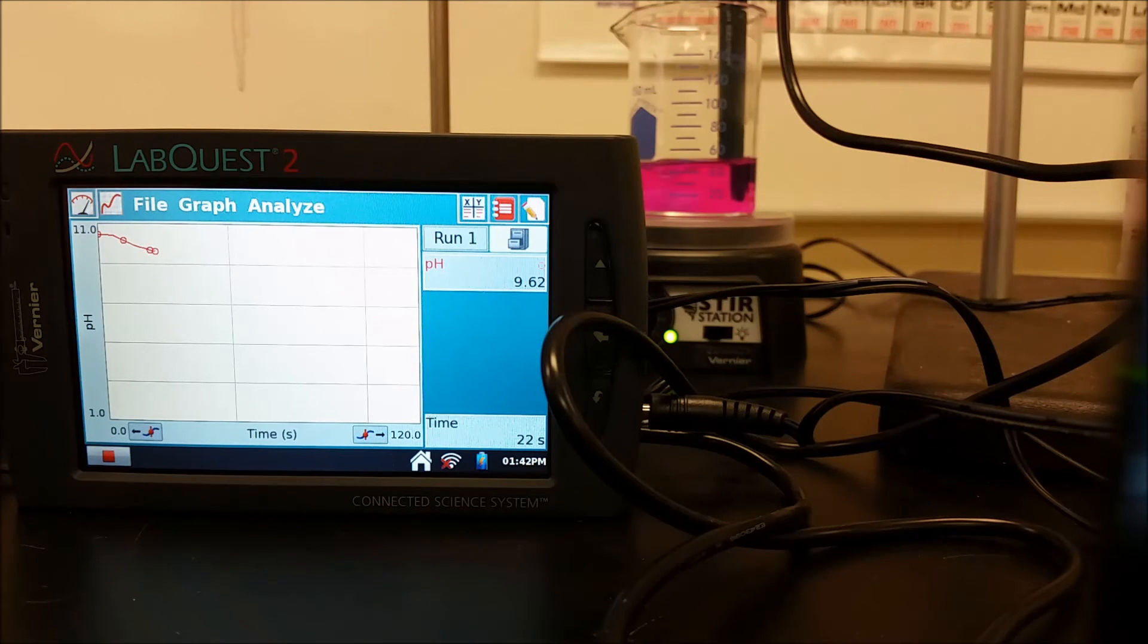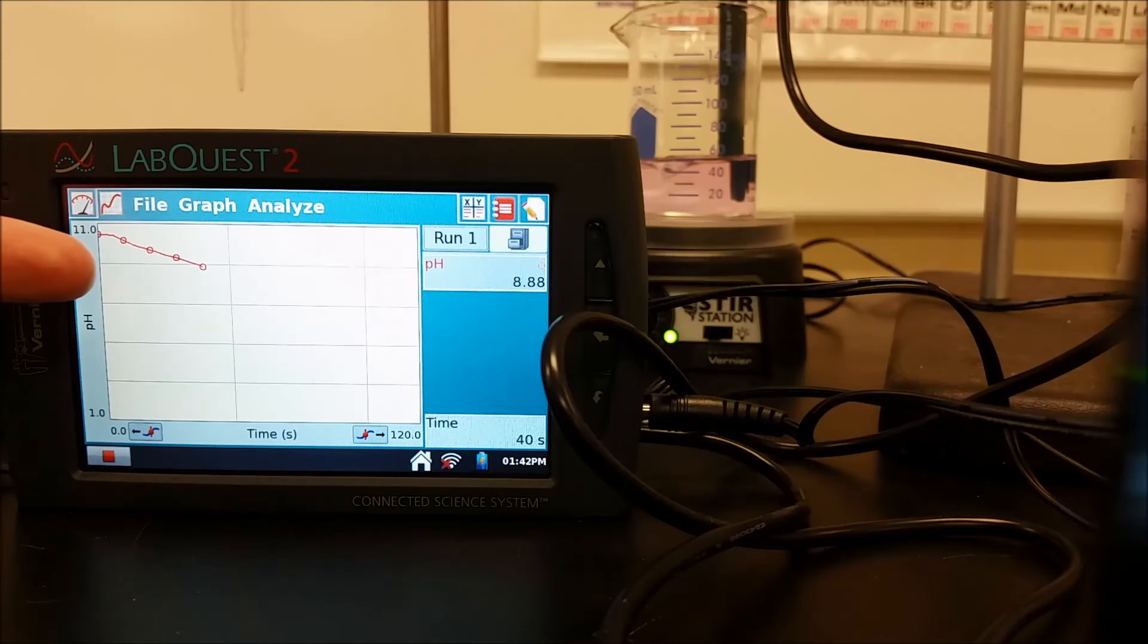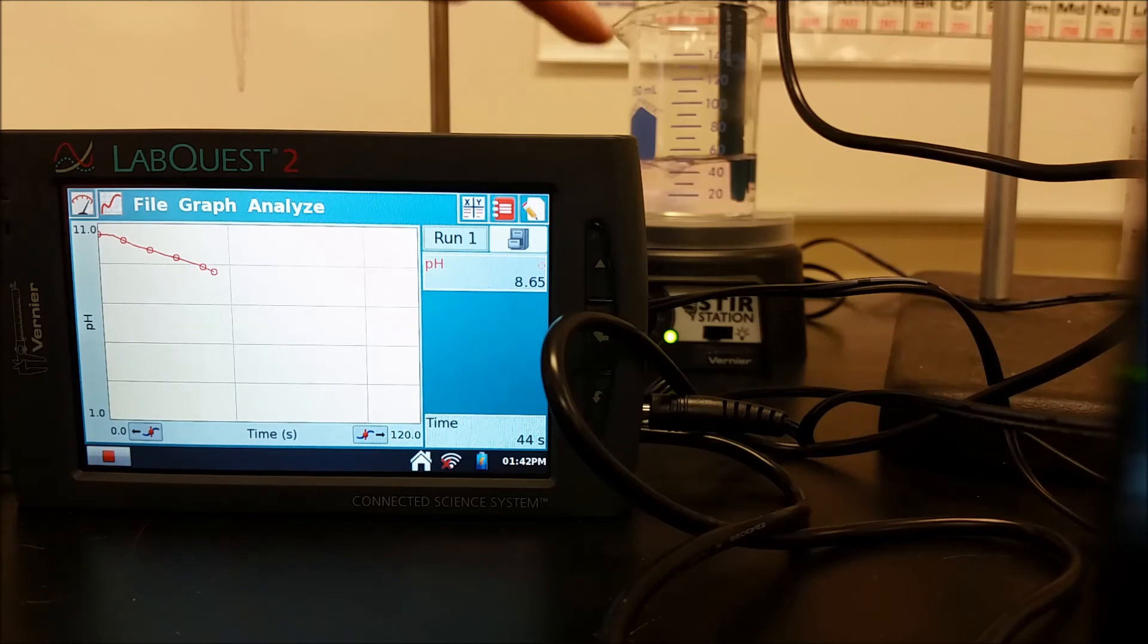You can see the pink color is starting to get a little bit lighter, and then pretty soon it's going to fade away to colorless, and we're still in the middle of our buffering region. So right now we're getting very faint, and now it looks like we've gone to colorless, but if you look on the screen and the titration curve, we're not at the point where we're at our equivalence point.